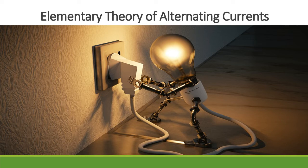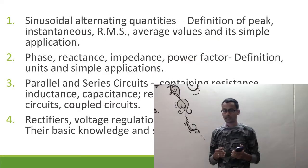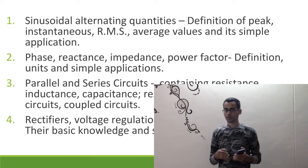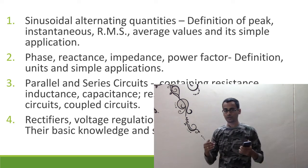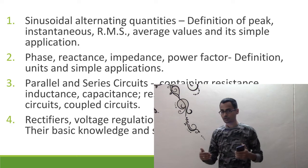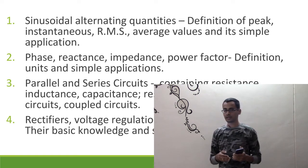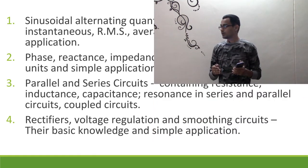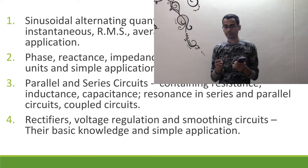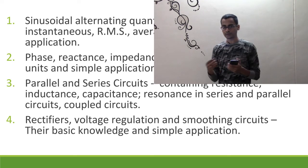Then we come into the elementary theory of alternating current. Most of our devices are driven by alternating current — the commercial power supply which comes to your home. We start off with sinusoidal alternating quantities, since the current in our supplies forms sinusoidal waves. We understand characteristics of a sinusoidal wave, followed by concepts on phase, reactance, impedance and power factor. Parallel and series circuits are also covered, where we analyze how circuits with passive devices behave under alternating current.